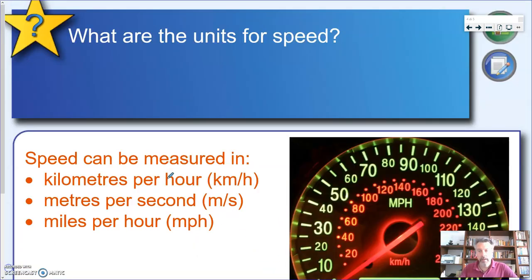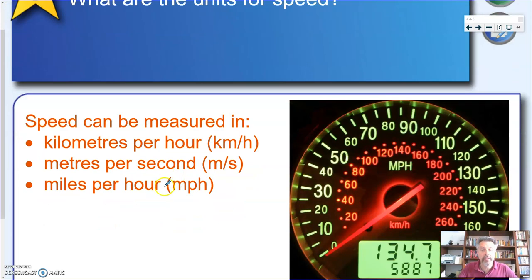So as for every physical quantity that we have seen this year, we need also to define its units. Now, the units of speed do not have their own name like the Newton or the second. They're defined as the units that make up speed. Since speed is defined as distance over time, obviously, the units of speed will be given by units of distance divided by units of time.